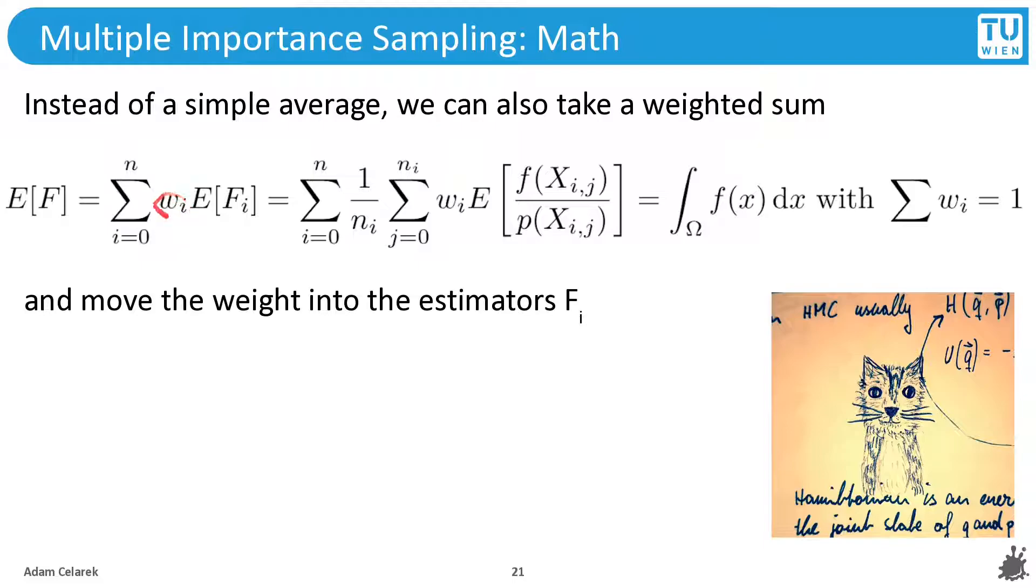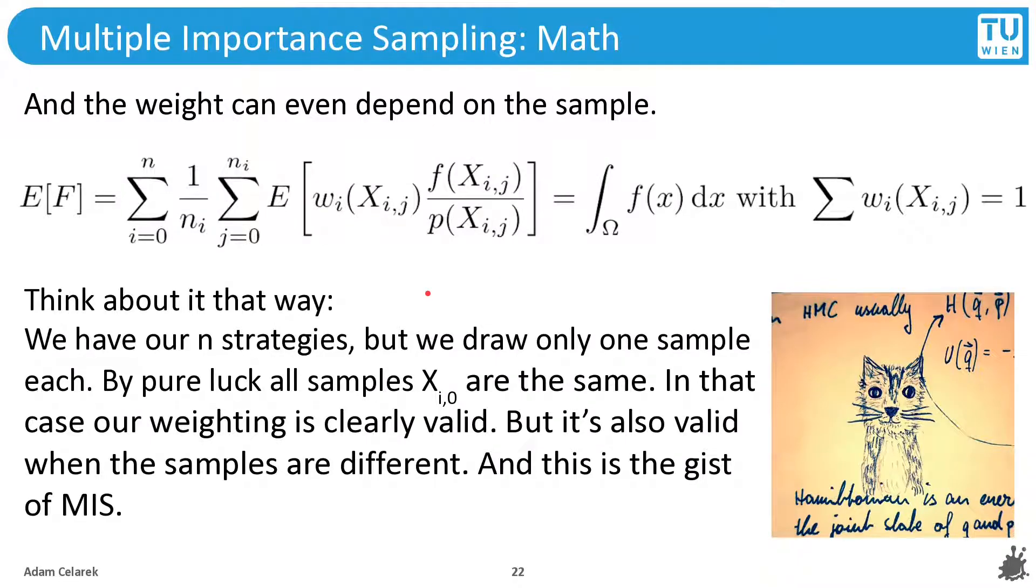And what we can do here, we can expand this estimator, like here, and we can pull in this weight inside this inner sum. This expectation here is unbiased. So when we combine it this way, it will be unbiased again. We can do even better by pulling this factor inside the expectation.